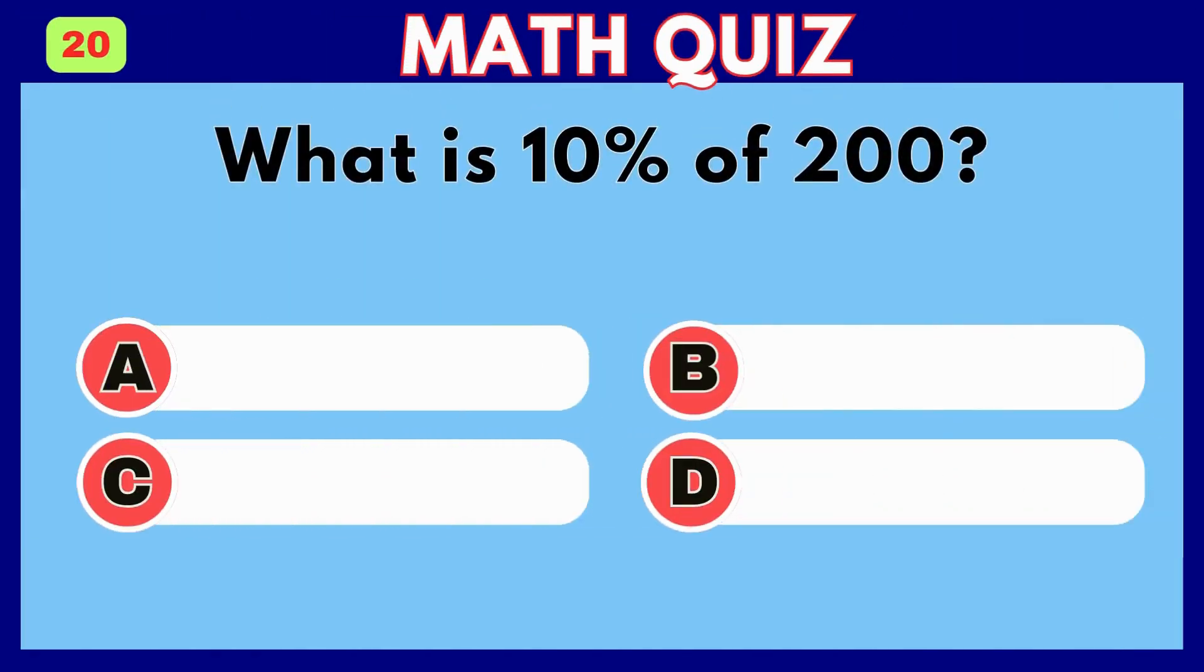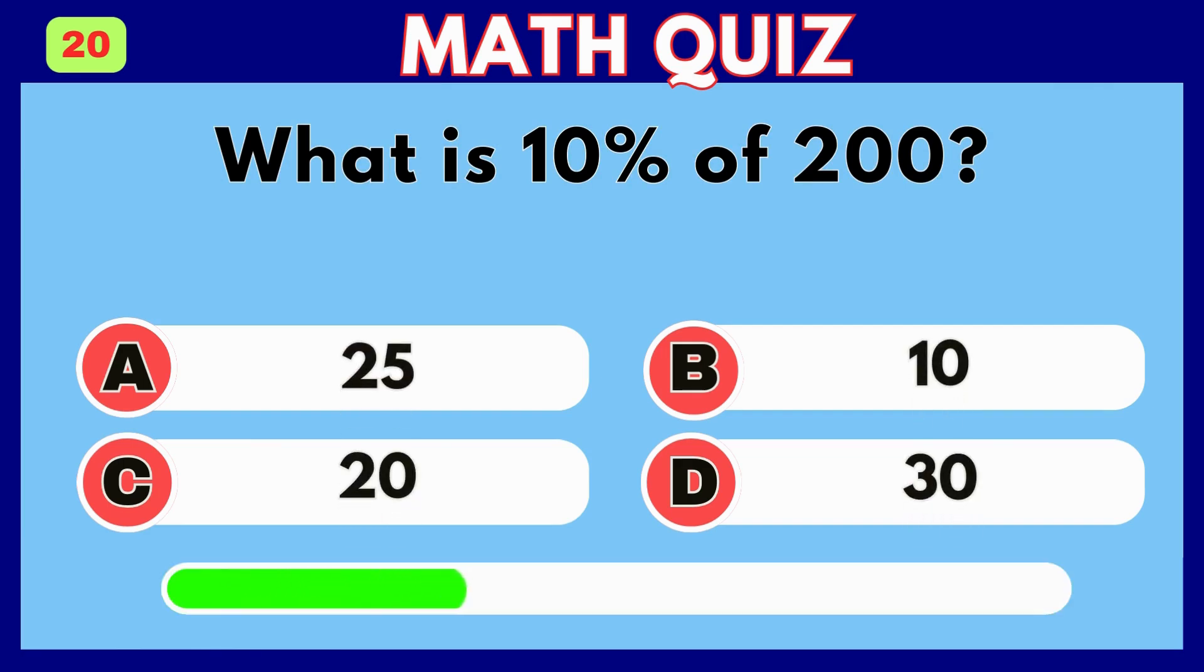What is the smallest three-digit number? Answer C, 100.